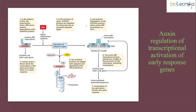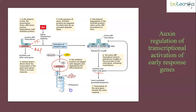In the auxin signaling pathway, ARF is the transcription factor and aux-IAA serves both as a repressor and as an early response gene. When auxin is not present, the repressor inhibits the transcription factor. But when auxin binds to the corresponding receptor, the aux-IAA will be ubiquitinated and targeted for proteasomal degradation, whereas ARF will undergo dimerization, giving rise to auxin response gene expression.